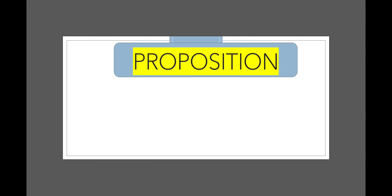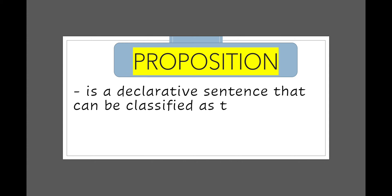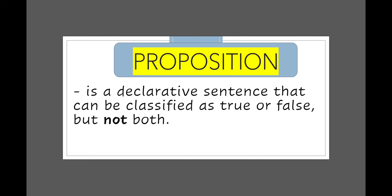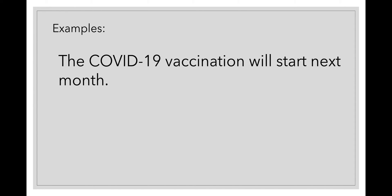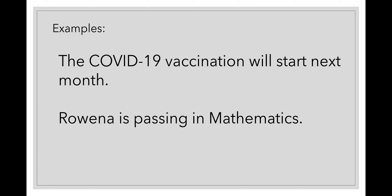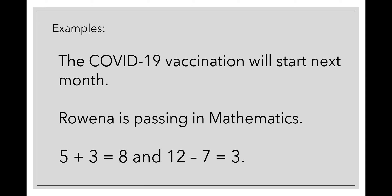When you start to express your complete idea, whether it is true or false, that is a proposition. So, what is a proposition? It is a declarative sentence that can be classified as either true, denoted by T, or false, denoted by F — but not both. Examples: 'The COVID-19 vaccination will start next month' — a declarative sentence answerable by true or false. 'Rowena is passing in mathematics' — also a declarative sentence answerable by true or false. '5 plus 3 is equal to 8, and 12 minus 7 is equal to 3' — can be answered by true or false. Therefore, these are propositions.